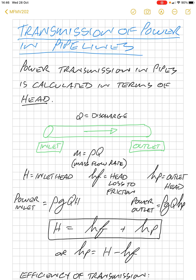Or, putting the outlet power as a subject of the formula, we've got the total power minus friction losses in the pipe.